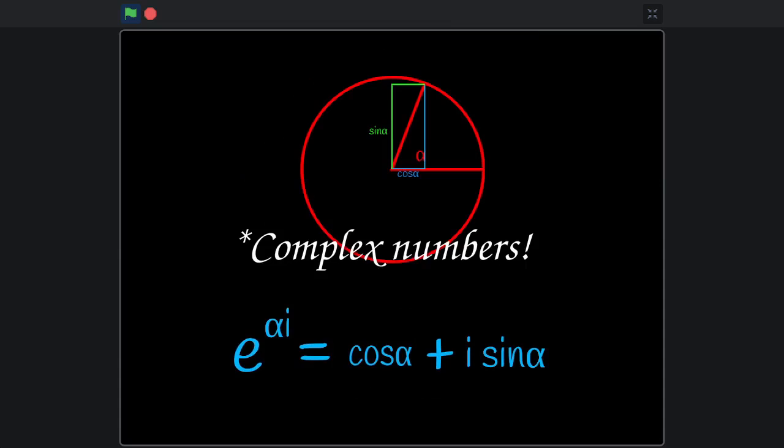Now consider that imaginary numbers are indeed two-dimensional points, where the real part represents the x-axis and the imaginary part the y-axis.